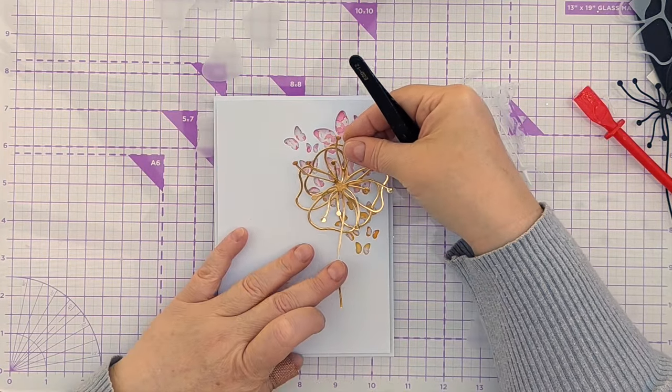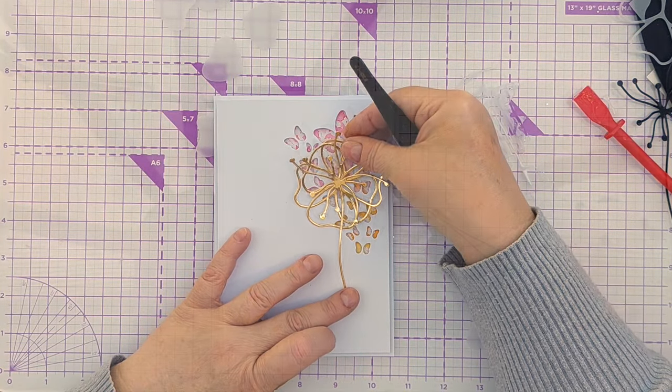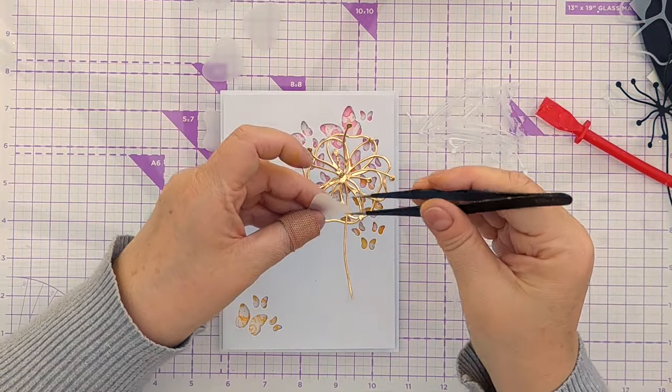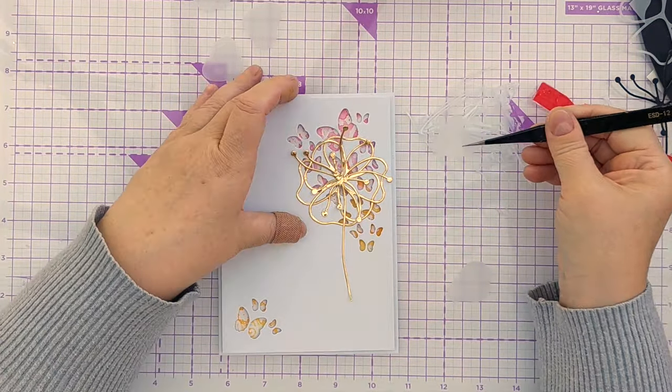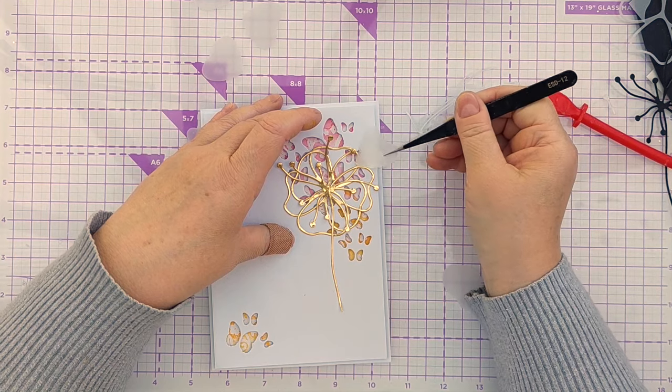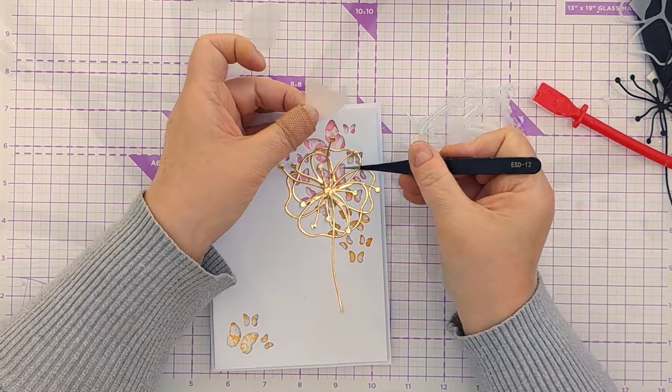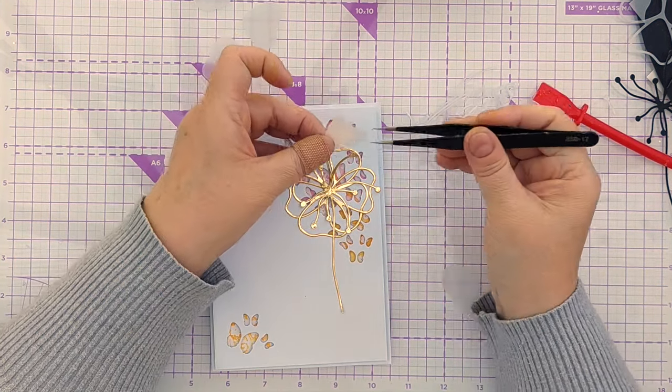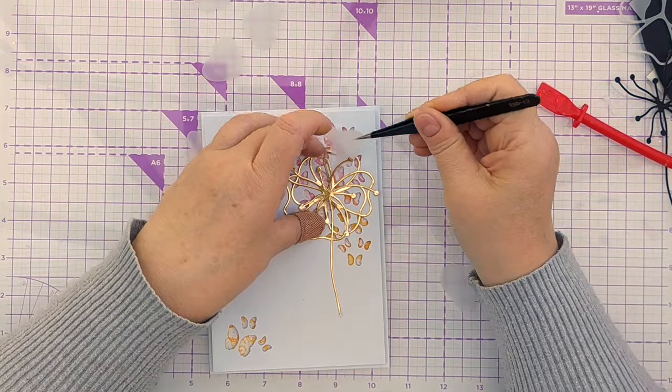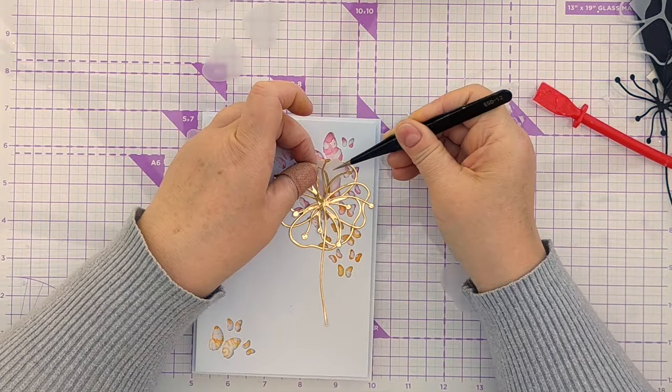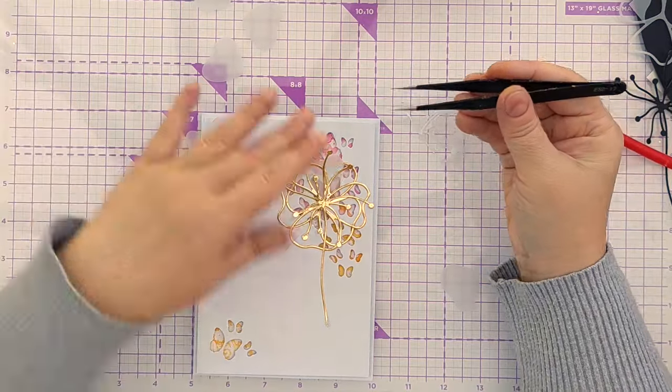Just trying to decide where to put it now. I think there. I'm going to gently pick up a little bit of glue. I think by the time everything's stuck down you're not going to see the glue on the back of the vellum. Just have a few petals. We don't need all six.